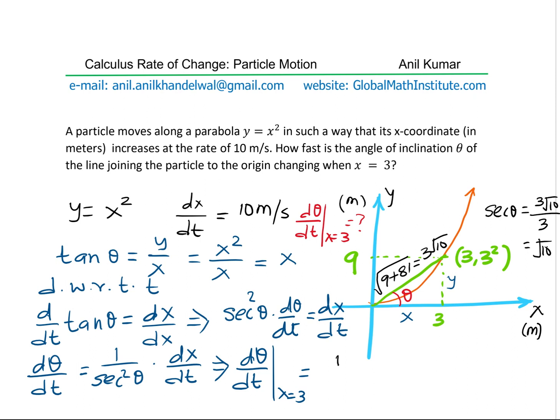So we have 1 over square root 10 for secant theta. Since it is square, we will square it times dx dt is given to us as 10.